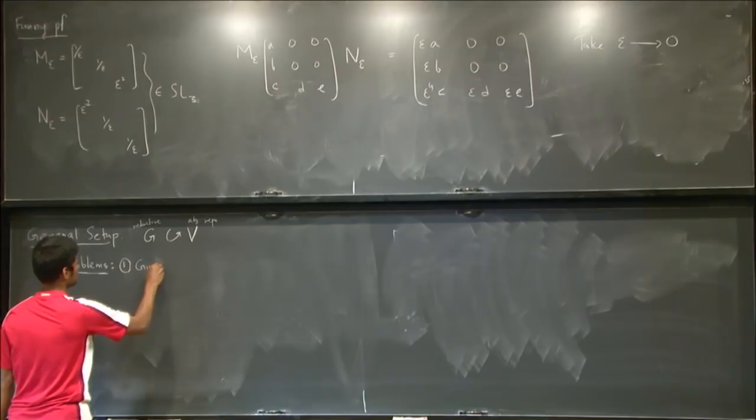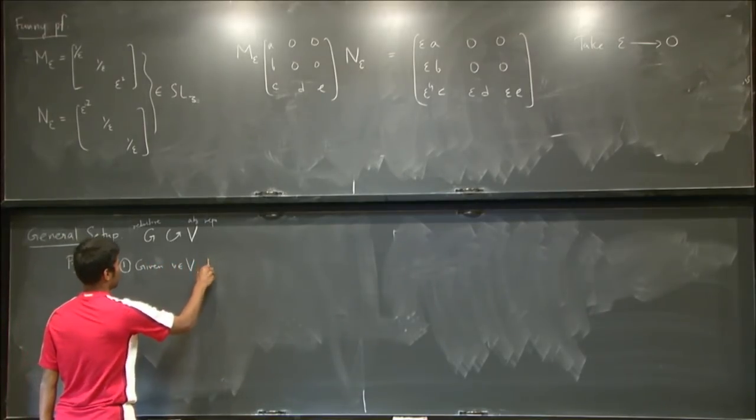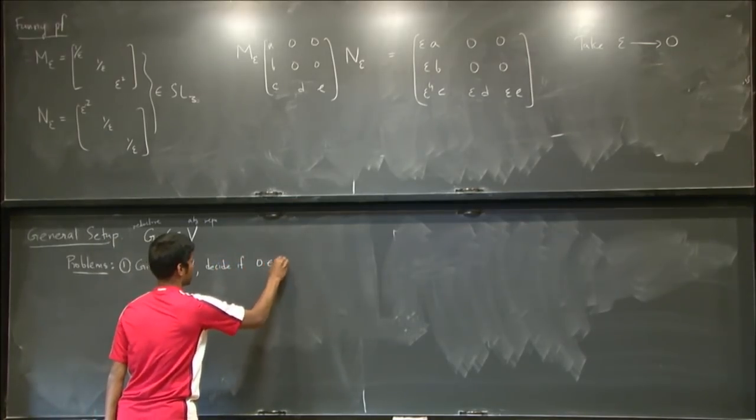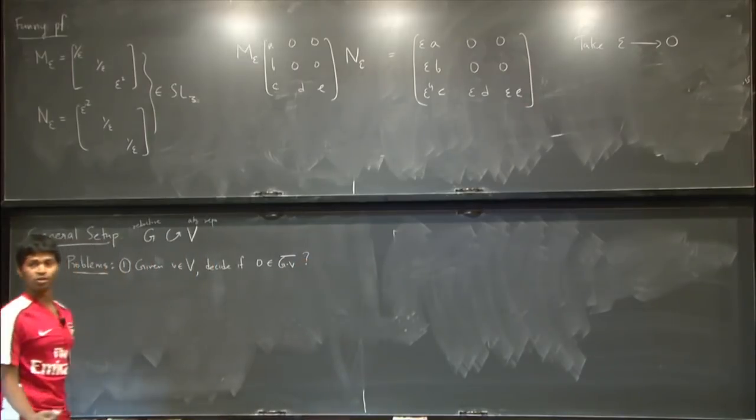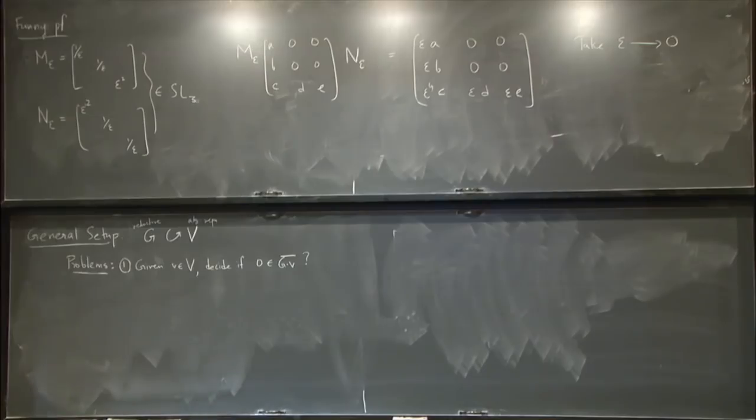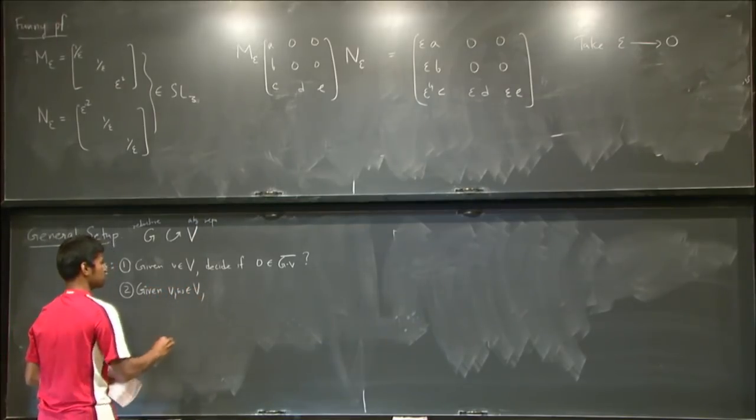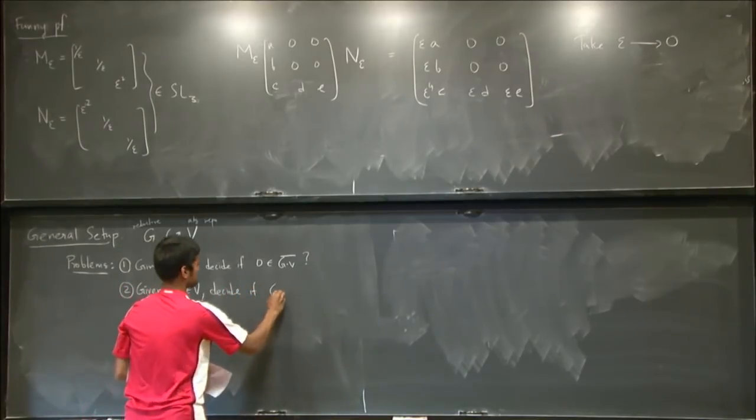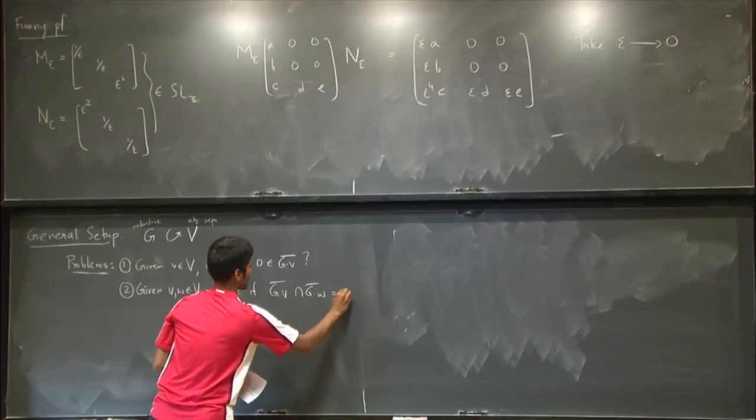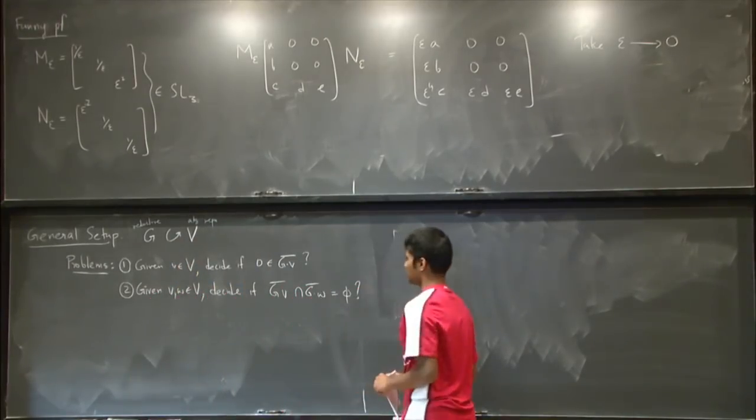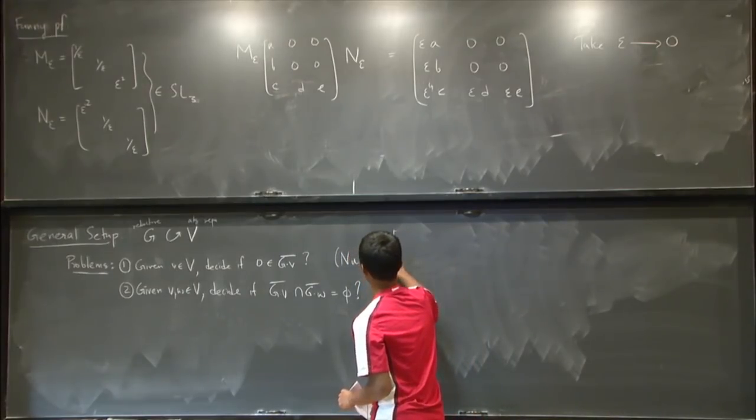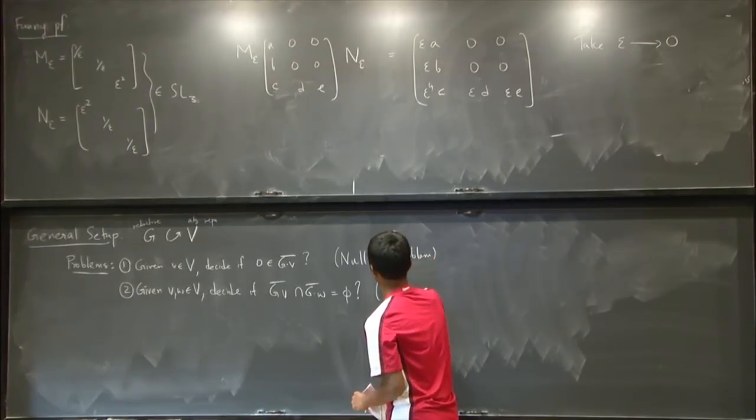So now here's kind of two problems that are kind of inspired from this little thing that I did. So the first one is if I give you some element in your vector space, how can you tell me if 0 is in the orbit closure? What can you possibly do to tell me this? In that case, it's kind of funny, but how did I get these M epsilon and N epsilon? Maybe I gave you the same thing, but I changed the basis. That's kind of harder to find these things, right? Yes, this is something to do. And here's a slight generalization of it, but just as interesting. So if I give you two different points in the vector space, how can you decide if their orbit closures intersect?